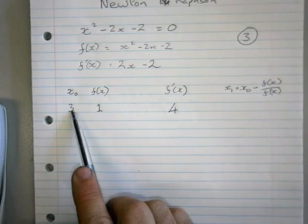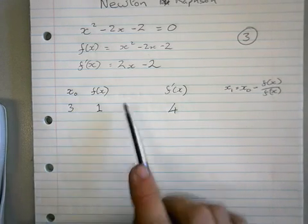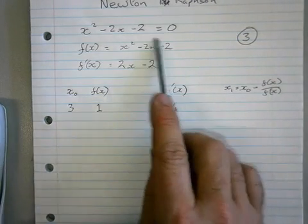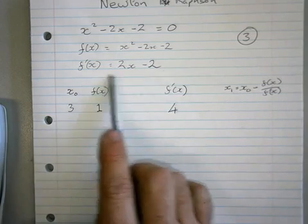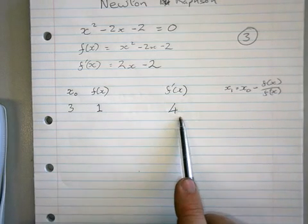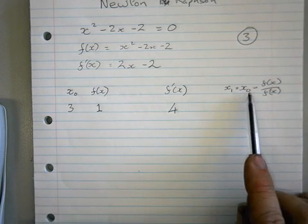So I write down 4 there. So I started with my x value 3. I've put it into my calculator as x. I've chucked it into the f(x) one, got an answer of 1, I wrote it down. Chucked it into f'(x), got an answer of 4, wrote it down.